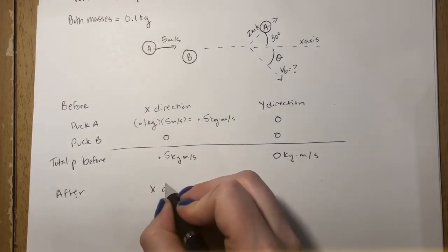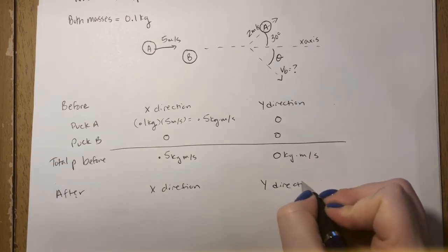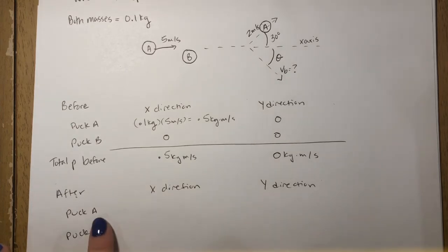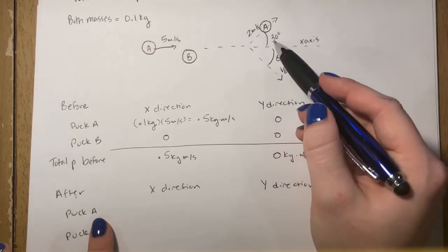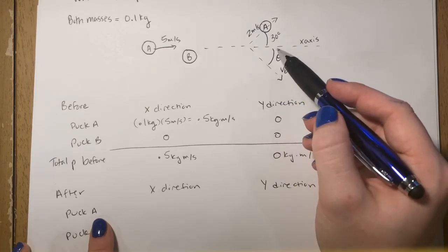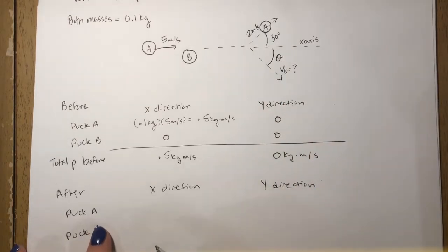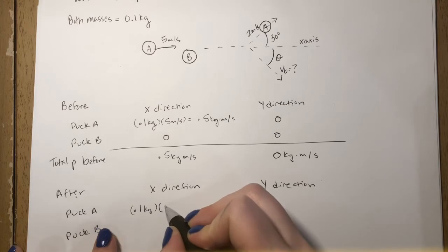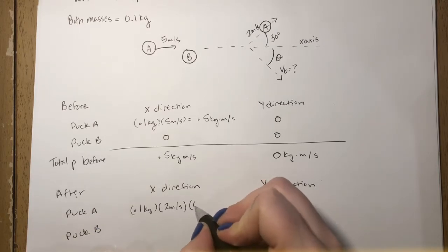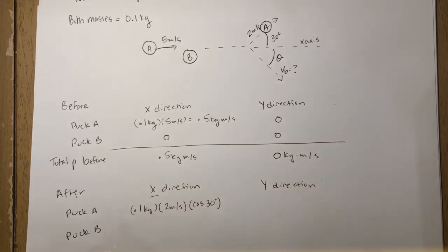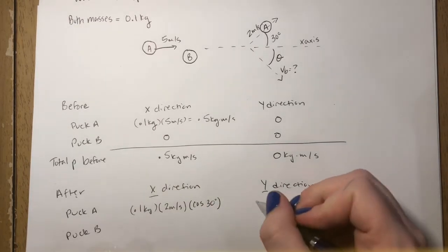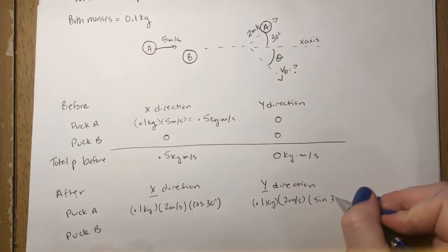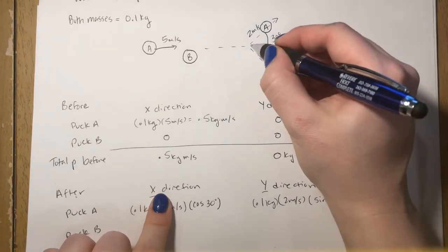Now writing the momentum in the x and y direction after is a little bit more laborious. For puck A in the x direction, we are going to have 0.1 kilograms times 2 meters per second times the cosine of 30 degrees, because it is moving at an angle of 30 degrees. For the y direction, we write out the same thing except now we're going to use the sine of 30, so it's going to be 0.1 kilograms times 2 meters per second times the sine of 30 degrees.